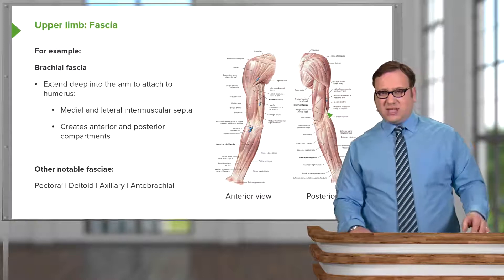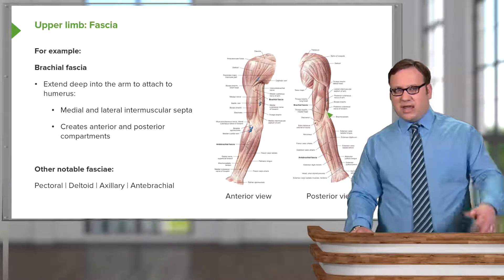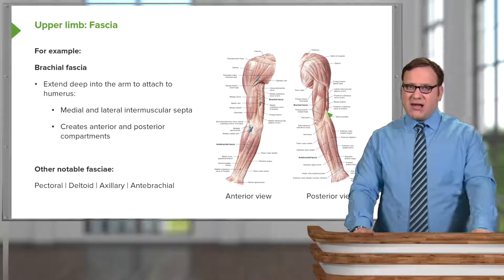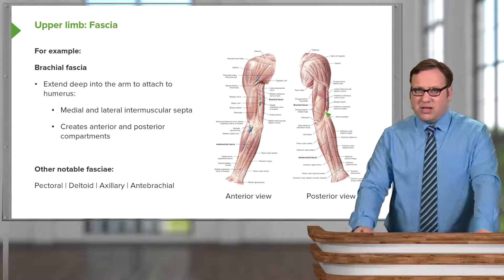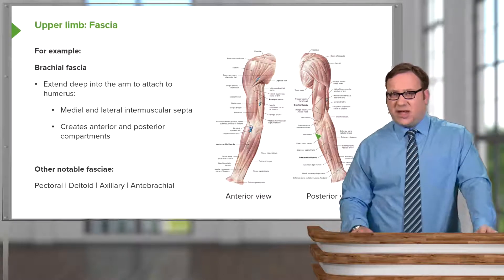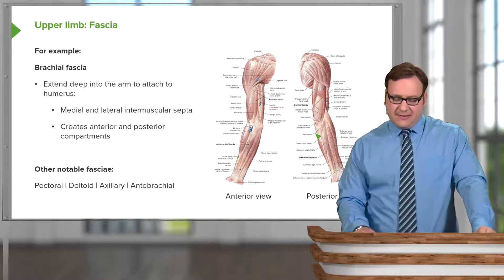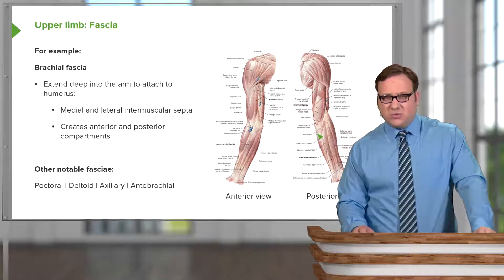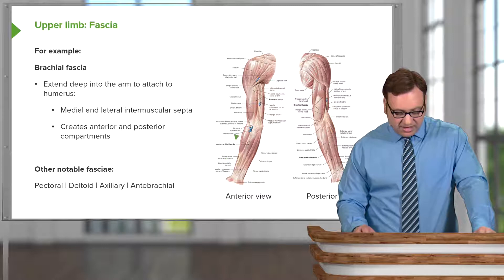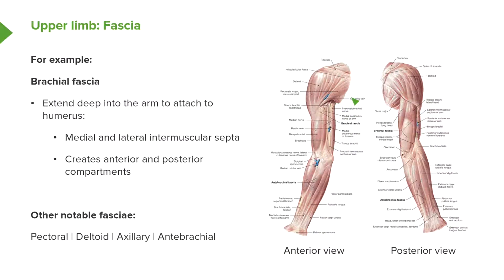A similar arrangement occurs in most regions of both the upper and lower limb. In the forearm, for example, we also have anterior and posterior compartments. In the leg region, we have anterior, posterior, and lateral compartments similarly formed by fascia passing deep into the limb. Other notable fascia include the pectoral fascia over the pectoralis muscles, the deltoid fascia, the axillary fascia, and the brachial fascia extending into the antebrachial fascia — all important structures we'll return to throughout the course.